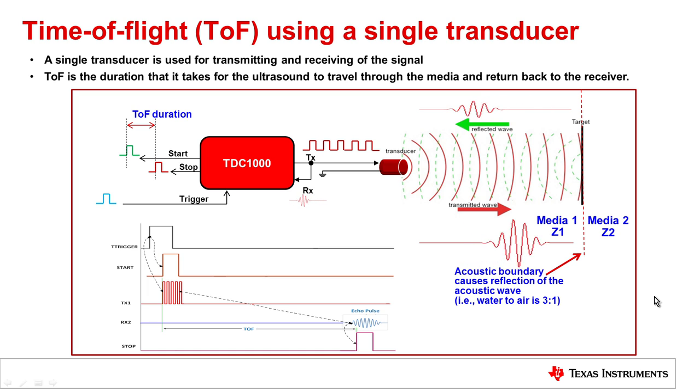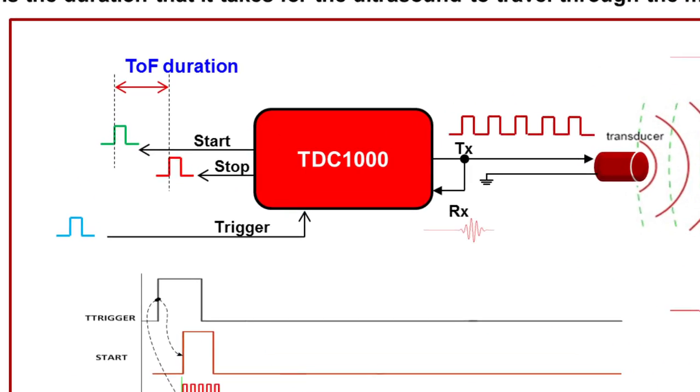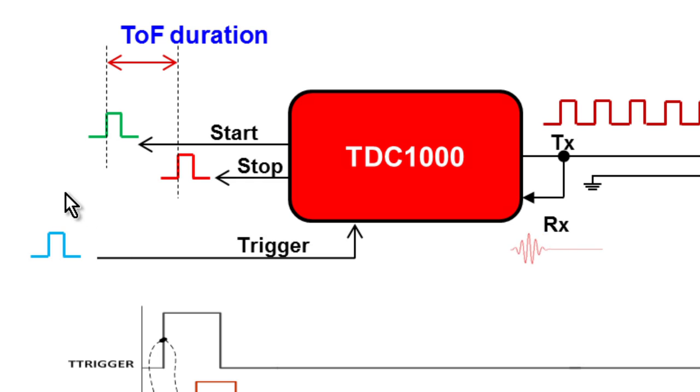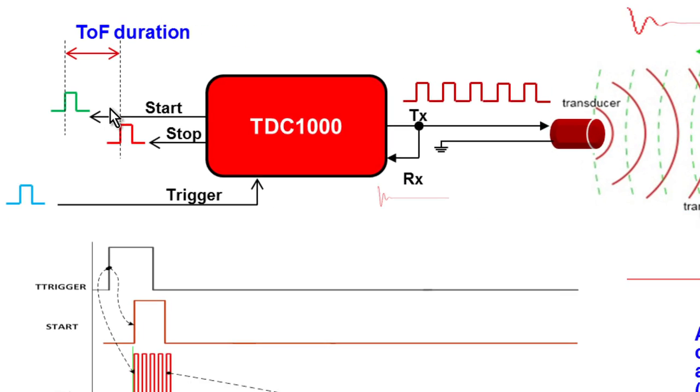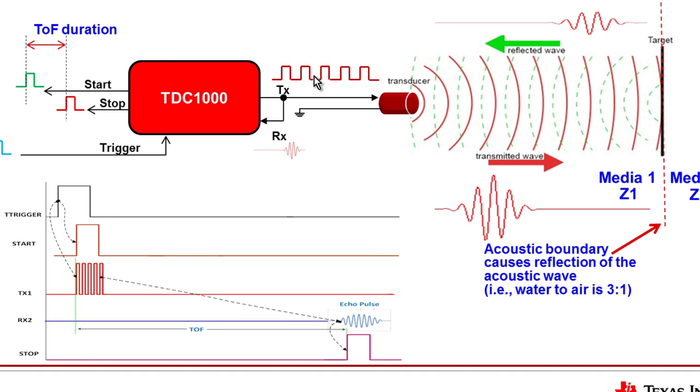Using a TDC1000, I can detect those echoes and those pressure waves by being connected to a transducer. In this diagram, the TDC1000 is excited by a trigger signal from a microprocessor. The TDC1000 then produces two separate signals that indicate the beginning, the start, and the stop, when the echo is received.